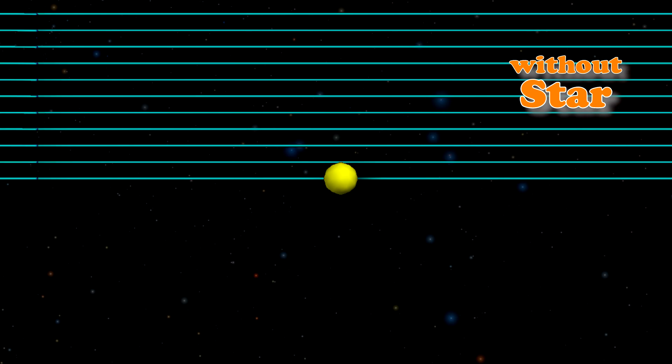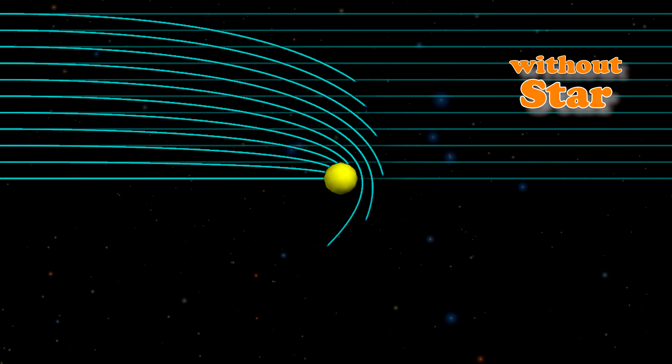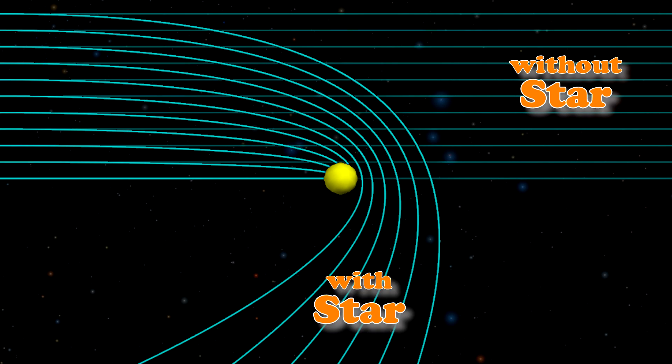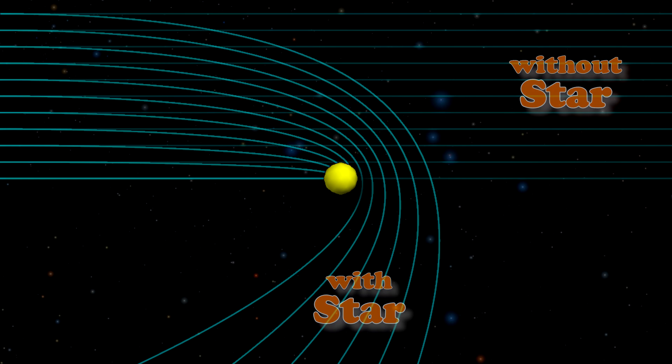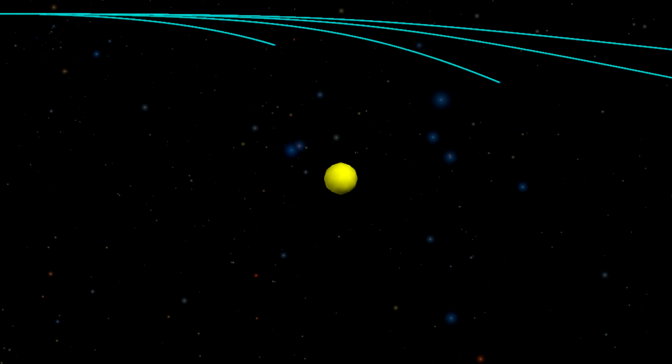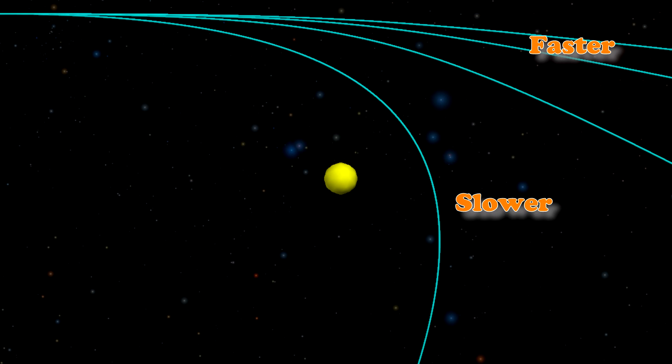A huge star can turn paths that look like this into paths that look like this. These least time paths also depend on the speed of the thing that's moving. The faster it's going, the less it's affected. But there is no speed that is unaffected — light is affected by gravity! So yeah, gravity's crazy.